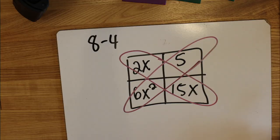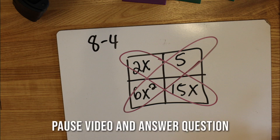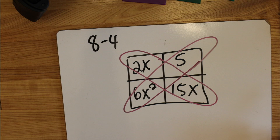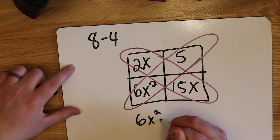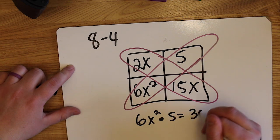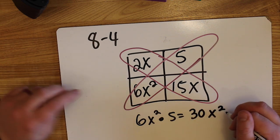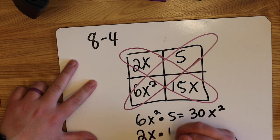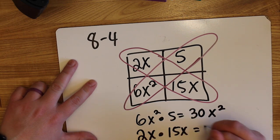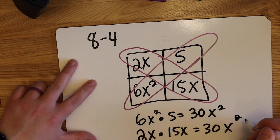In problem 4, we are asked what is the relationship between the diagonals in this generic rectangle? What do the diagonals have in common? So if you multiply 6x squared times 5, you get 30x squared. If you multiply 2x times 15x, you also get 30x squared. We're going to use this in upcoming lessons.